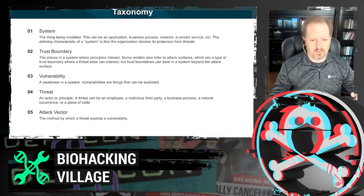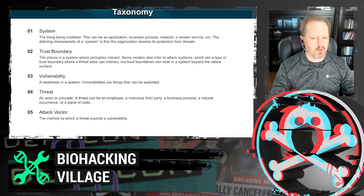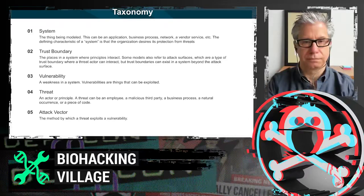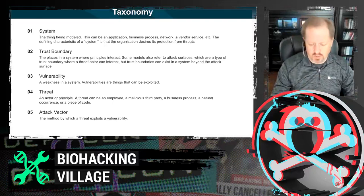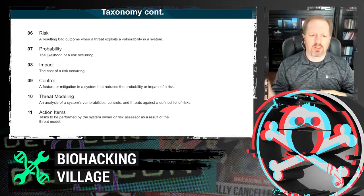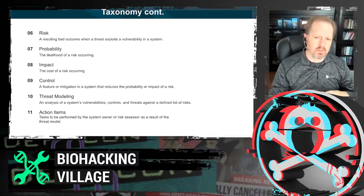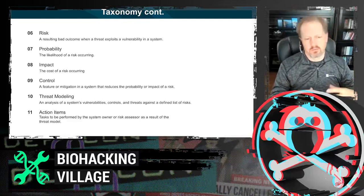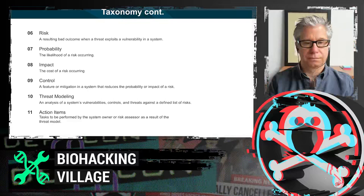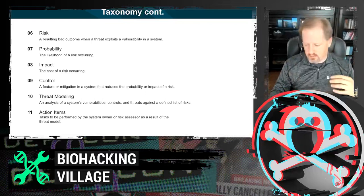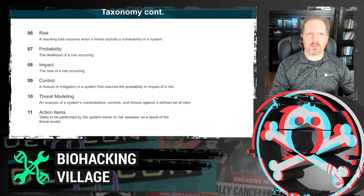A threat is an actor. A threat can be a person, an employee of a third party, a business process, or a piece of code. Threats exploit vulnerabilities, and we call that an attack vector in our taxonomy. Risk is then the bad outcome that results when a threat exploits a vulnerability. We measure risks by the likelihood — the probability — and the impact, or cost, if it does happen. You'll often see people put a dollar amount on probability to get an adjusted risk score, and that leads to inherent risks and residual risks.